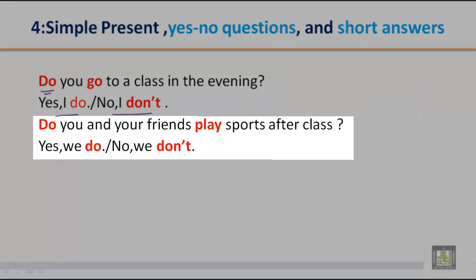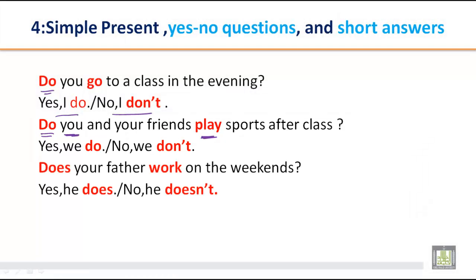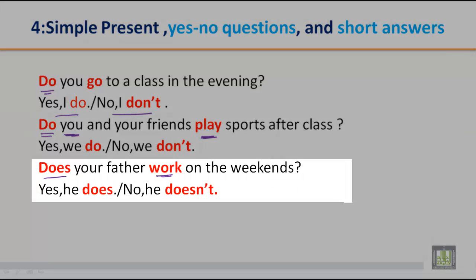'Do you and your friends play sports after class?' — 'Yes, we do.' / 'No, we don't.' With 'you' we use 'do' and the verb stays in simple present without -s. 'Does your father work on the weekend?' — 'Yes, he does.' / 'No, he doesn't.' Notice the difference: 'do' with you, and 'does' with he.